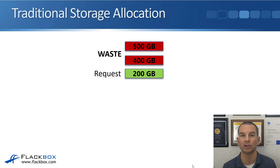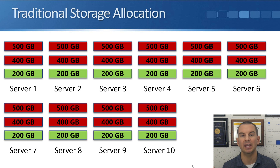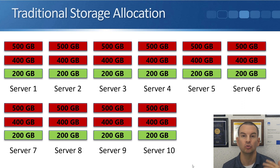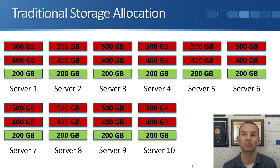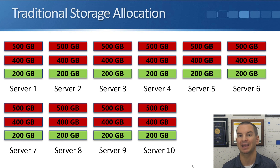To compound the problem, this organization probably doesn't just have one server — they're going to have multiple servers, so this problem is going to be multiplied. If they had 10 servers in the same situation, 10 times 200 gigabytes is 2 terabytes of disk space actually required. But just in case you need more, you ended up paying for 5 terabytes worth of storage — leaving 3 terabytes that you bought just in case being wasted.